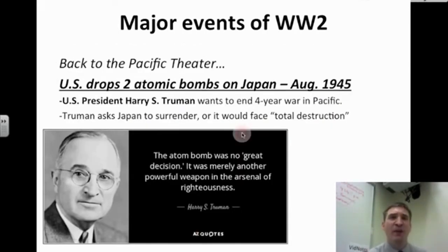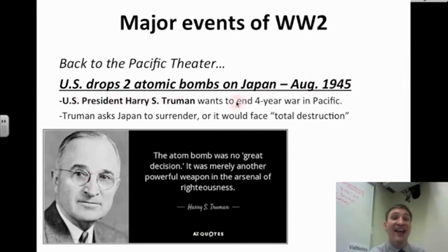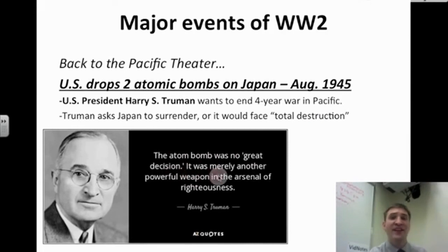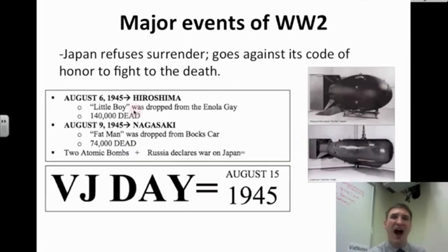Back in the Pacific Theater, the U.S. drops two atomic bombs on Japan in August 1945. U.S. President Harry S. Truman makes this decision, wanting to end the four-year war in the Pacific. Truman asks Japan to surrender or face total destruction, saying: 'The atom bomb was no great decision — it was merely another powerful weapon in the arsenal of righteousness.' Japan refuses to surrender because surrender goes against its code of honor — an old traditional samurai code of fighting to the death.